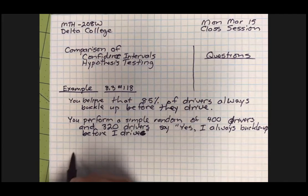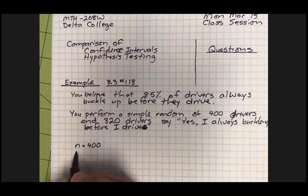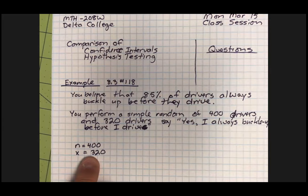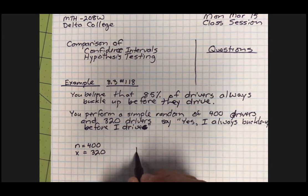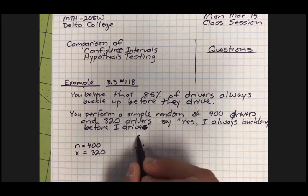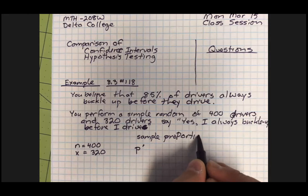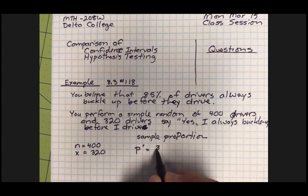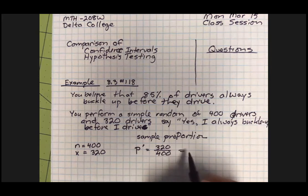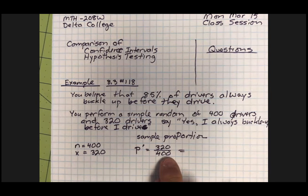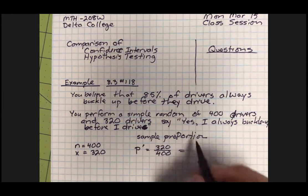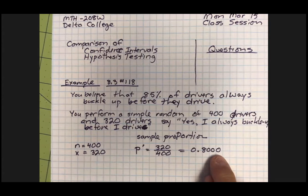You surveyed 400 people and 320 of them say they buckled up. What proportion is that? This is your sample proportion: 320 out of 400. That's exactly 80%. But now you're nervous, because you believe that 85% of the drivers always buckle up — that's what the insurance company says, what you read in the New York Times, what you heard on CNN.